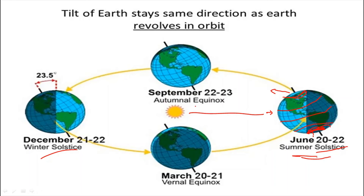Now let's talk about the autumn equinox. On September 23rd, the sun's rays fall directly on the equator. Days and nights are equal. There is autumn in the northern hemisphere and spring in the southern hemisphere.